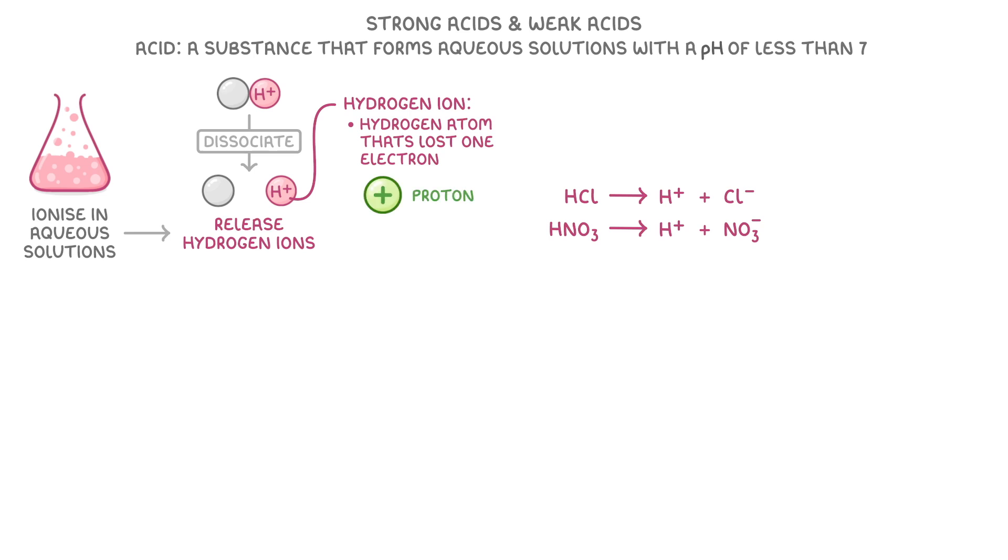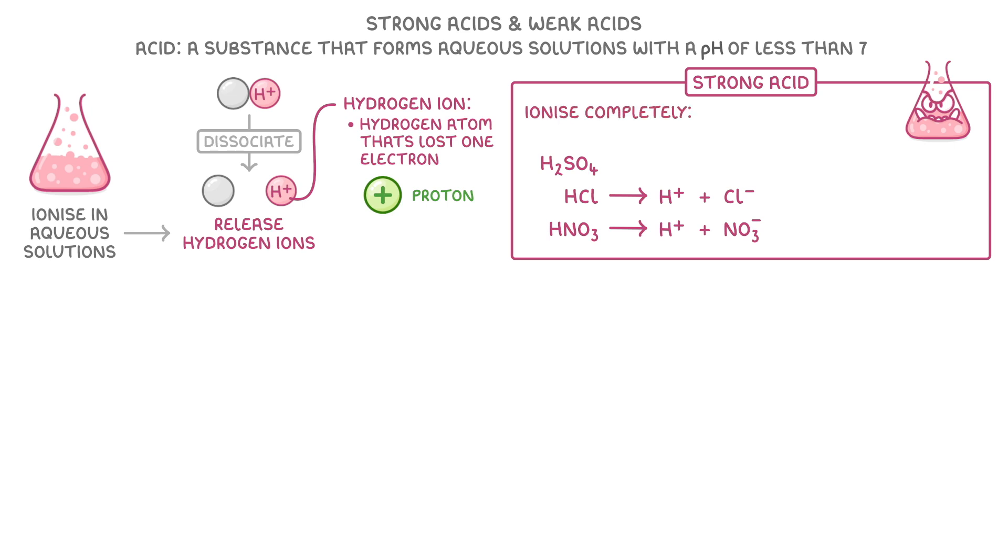Now hydrochloric and nitric acid are both examples of strong acids, just like sulfuric acid. And what defines them as strong acids is that they all ionise completely. So all the acid particles will dissociate to release hydrogen ions. Or in other words, the reactants turn completely into products.